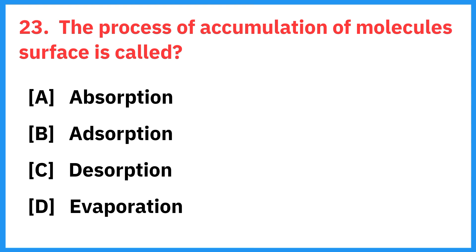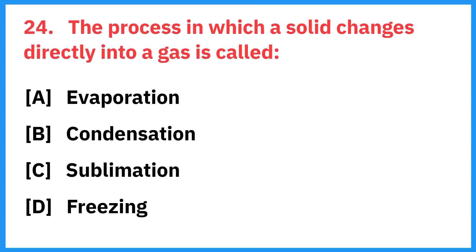The process of accumulation of molecules on a surface is called? Right answer is adsorption. The process in which a solid changes directly into a gas is called? Right answer is sublimation.